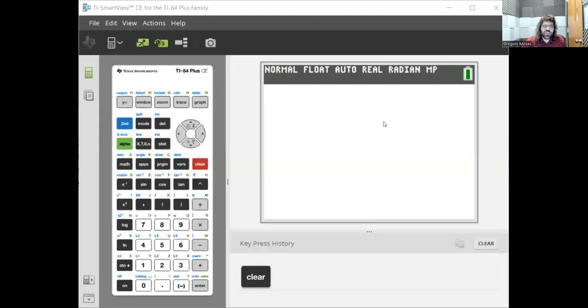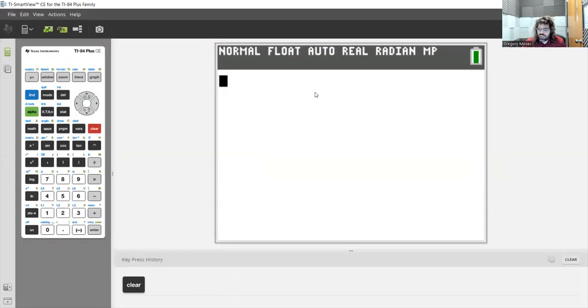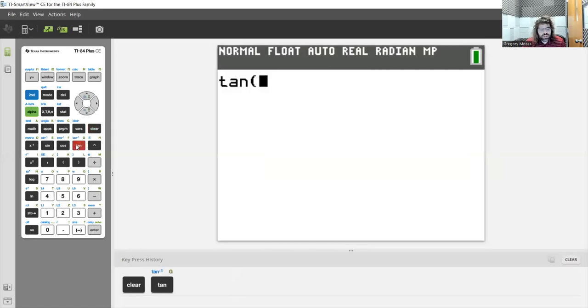Now, we need to be careful, because we know that angles can be measured in either radians or degrees. So if we tell our calculator we want the tangent of 47, is that going to give us the tangent of 47 radians or 47 degrees? To go back and forth,